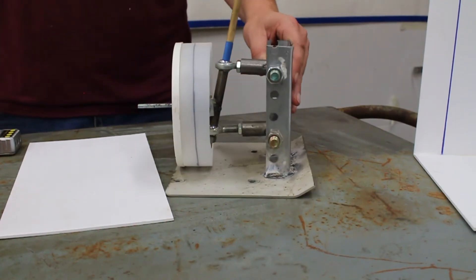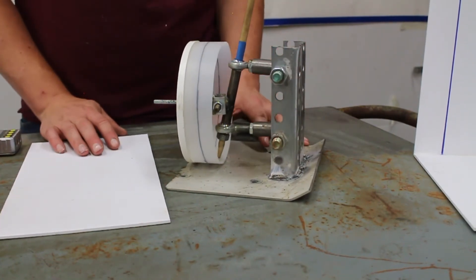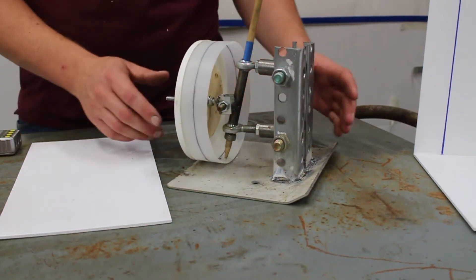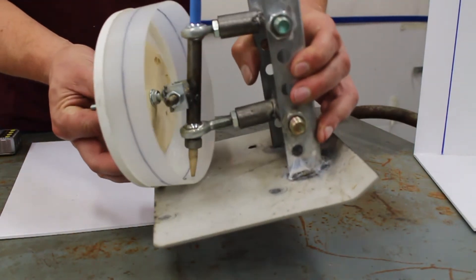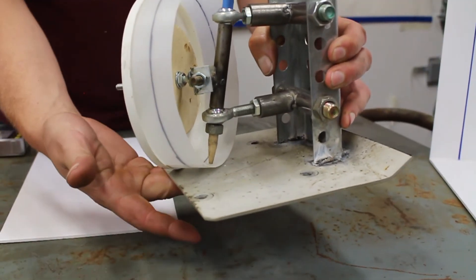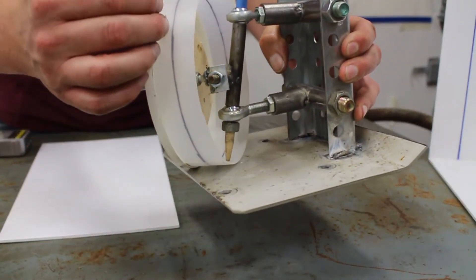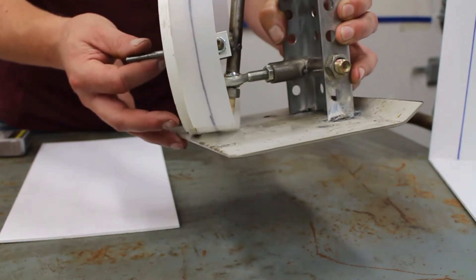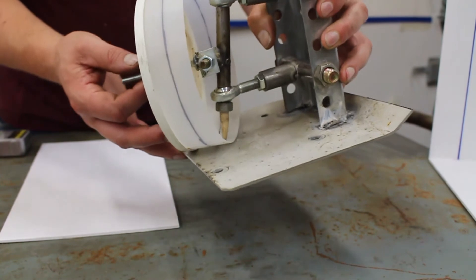Another dimension that we care about that's related to kingpin inclination is the scrub radius. Scrub radius is the distance between the intersection of the steering axis and the ground and the line that represents the center of the tread of the tire. So as you can see here, we have a very small scrub radius.